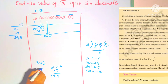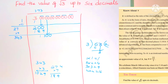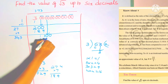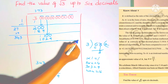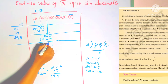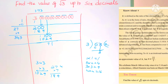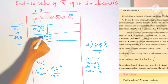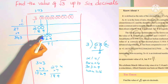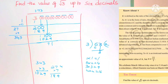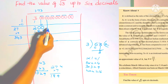Check 343×3: 3×3=9, 3×4=12, carry 1, then 3×3=9 plus 1 is 10, so 343×3=1029. Subtract: 1100 minus 1029 is 71. Write 3 in the quotient. Bring the next pair of zeros down, making it 7100.